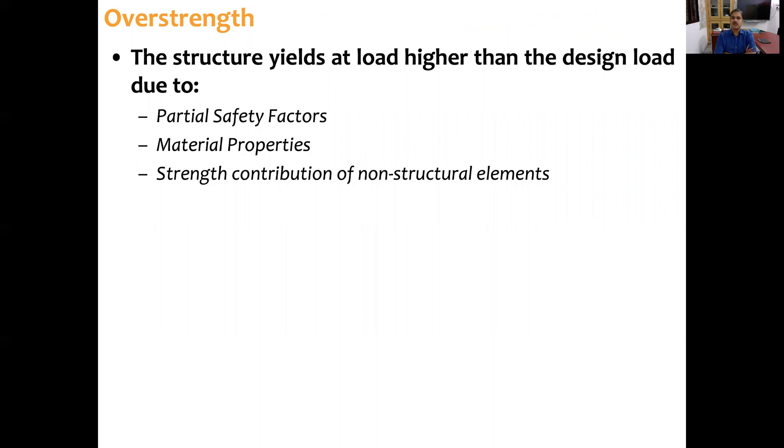Let's look at these three contributing factors. First one is over-strength. The structure yields at a load higher than the design load. Why? Because of partial safety factor, because of material properties. Characteristic strength, if we say M25 or M30, usually not more than 5% of test results fall below this value. So if you use M30, then automatically more than 95% of cubes fail above that. That is why we have over-strength. There is some contribution from the non-structural elements also.